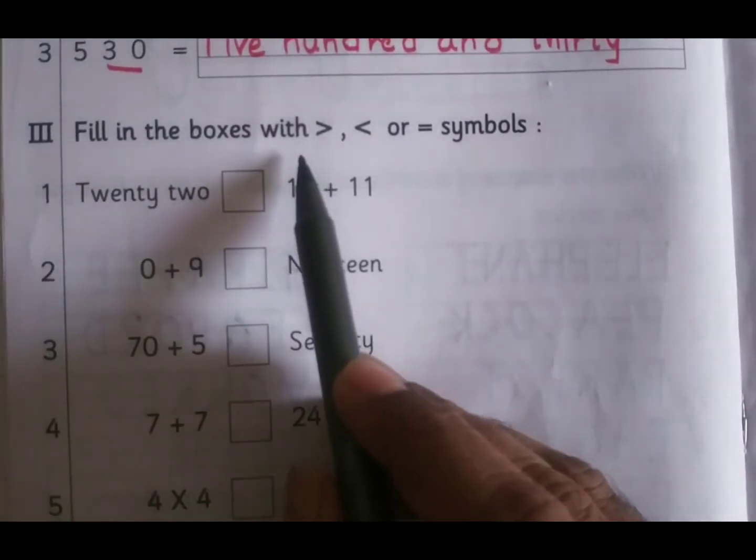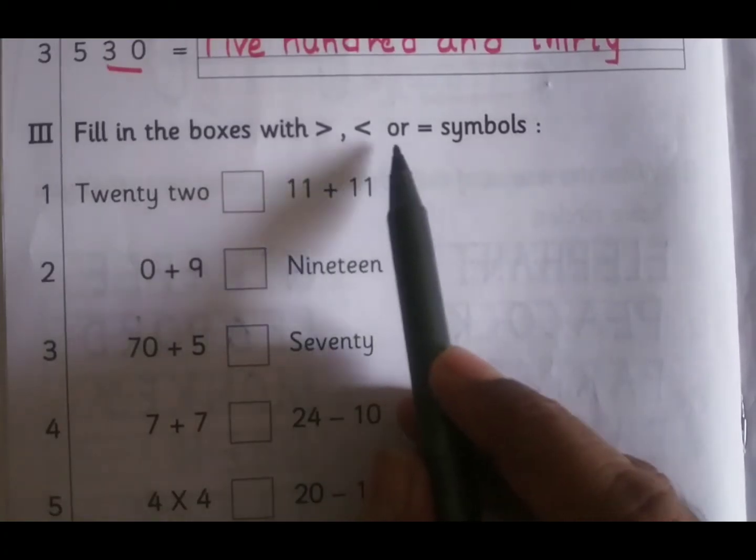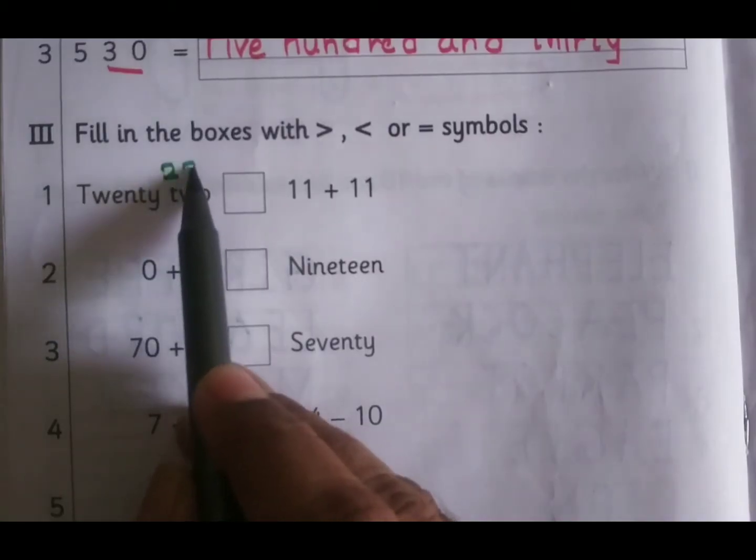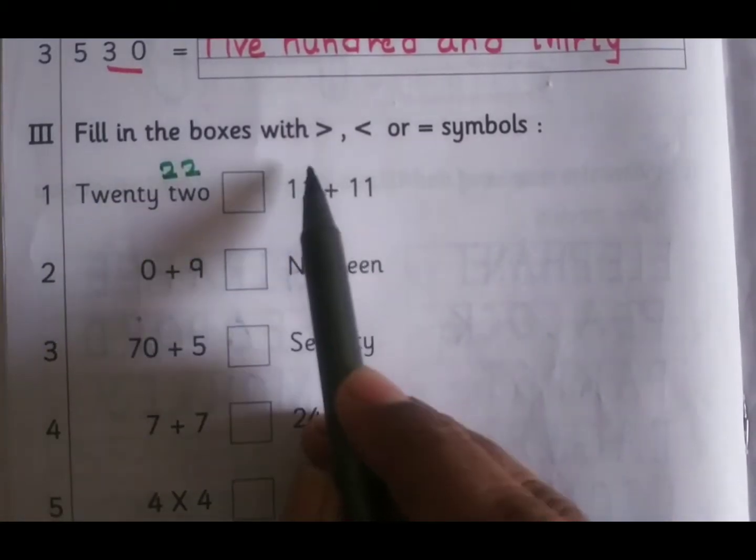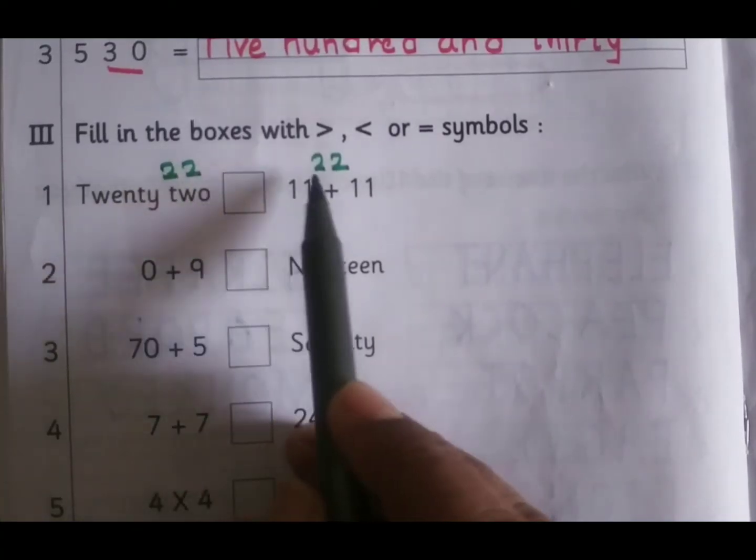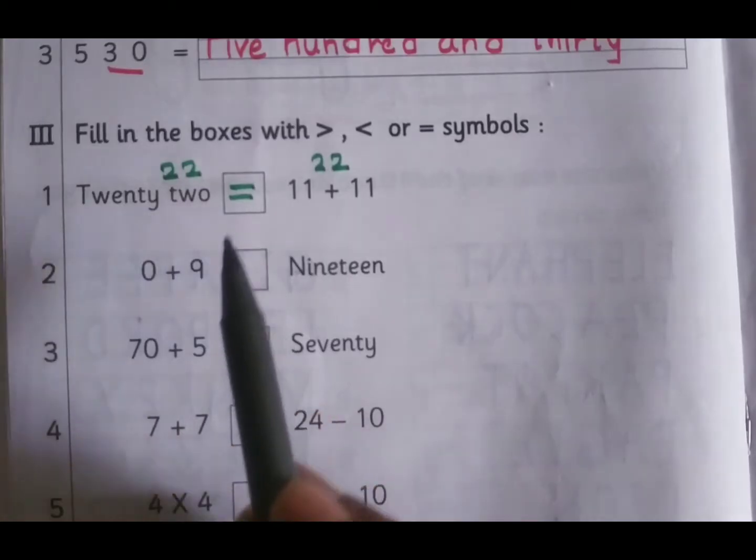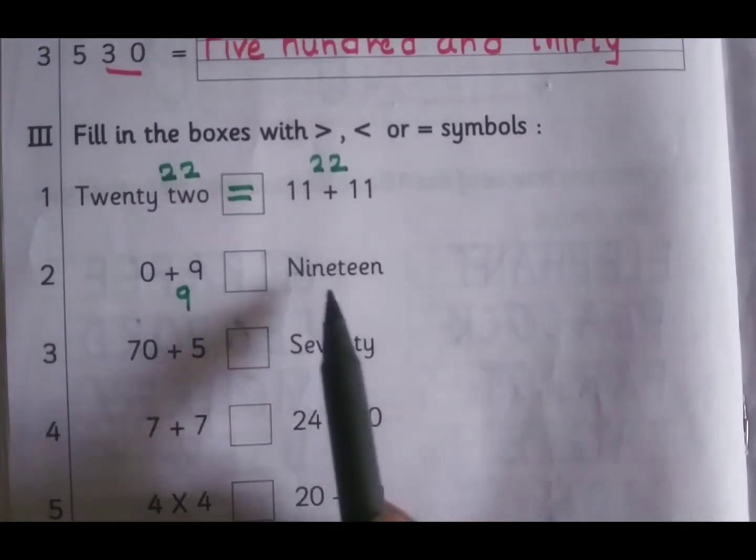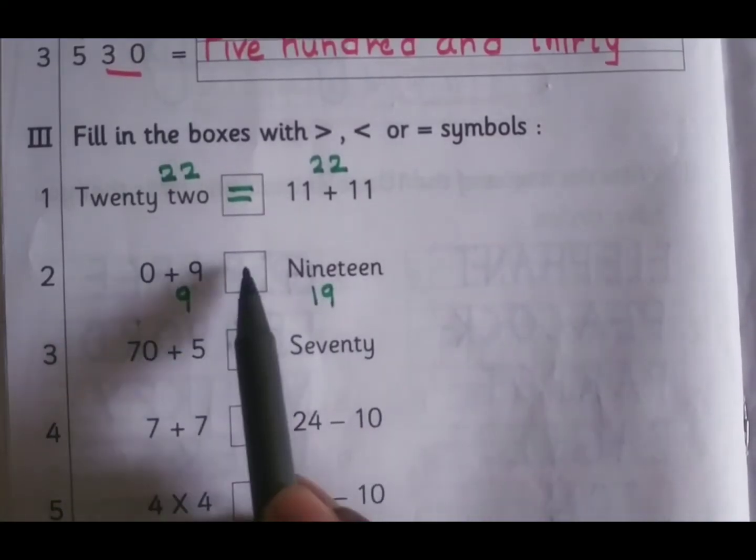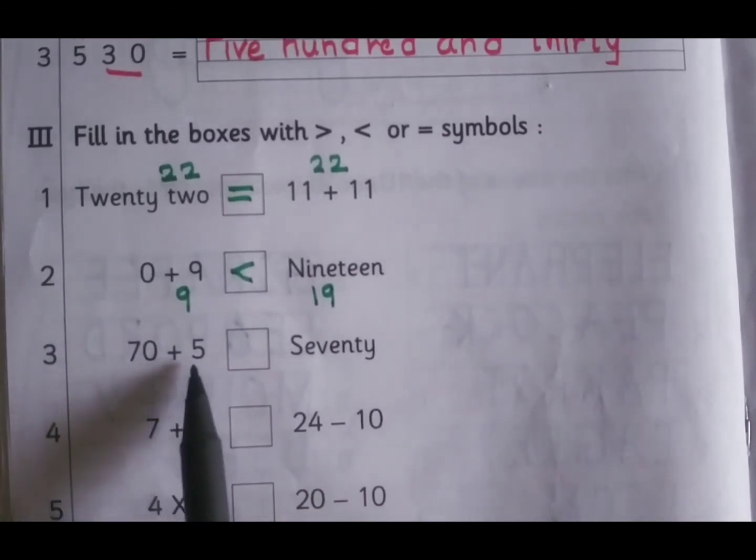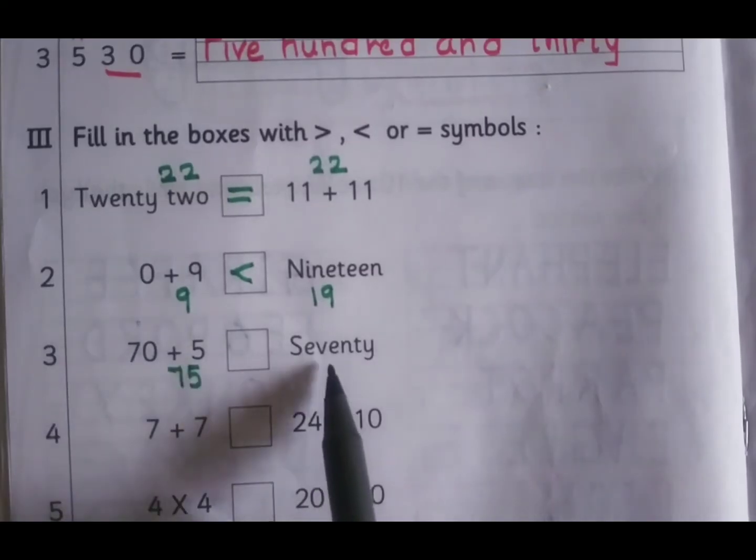Fill in the boxes with greater than, less than, or equal symbols. 22, write the number, and 11 plus 11 is 22. Here left hand side 22, right hand side 22, so same number, equal sign. 0 plus 9 will give you 9, and this is 19, so 9 is less than 19.